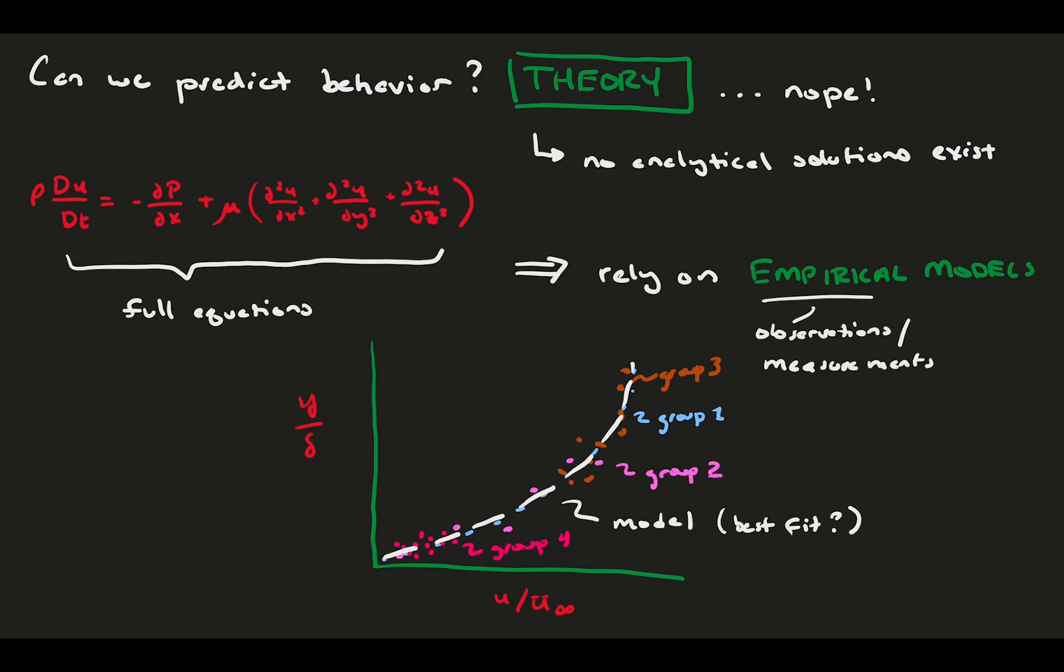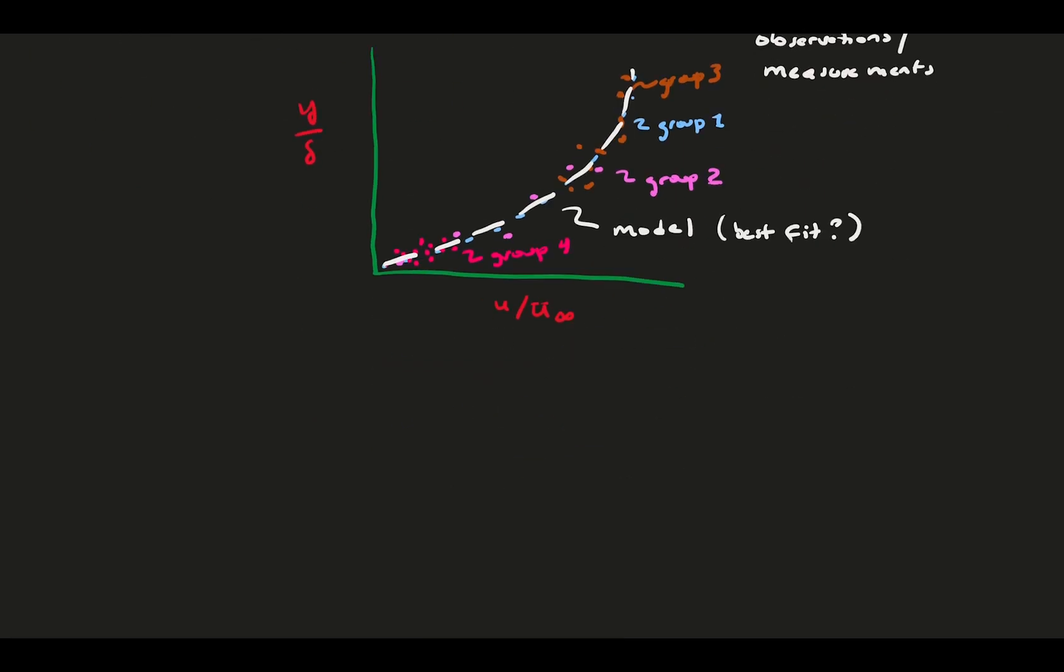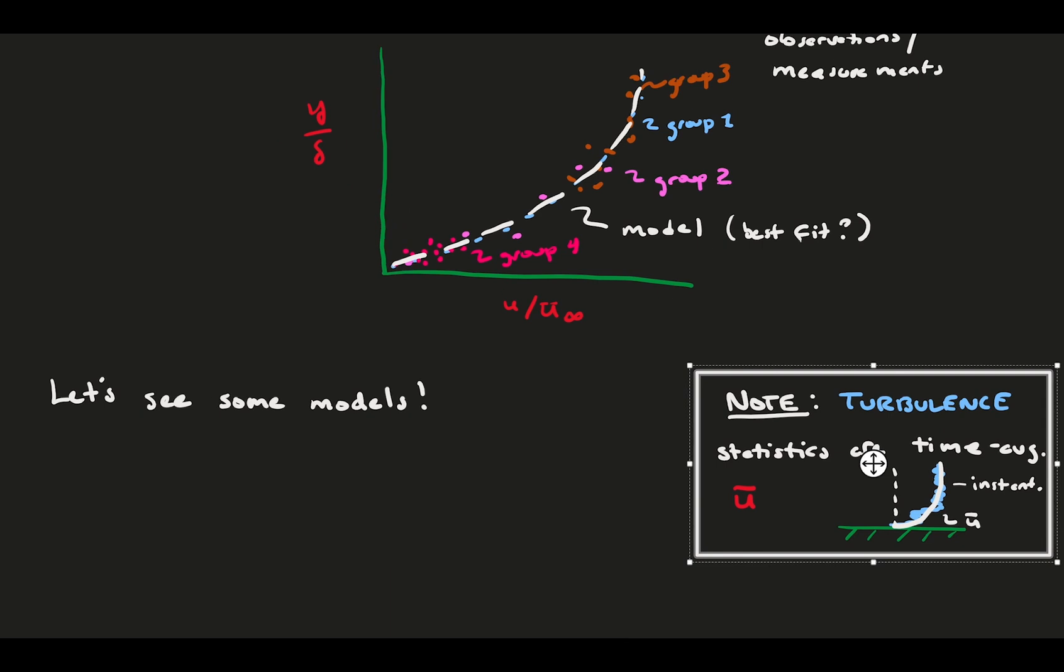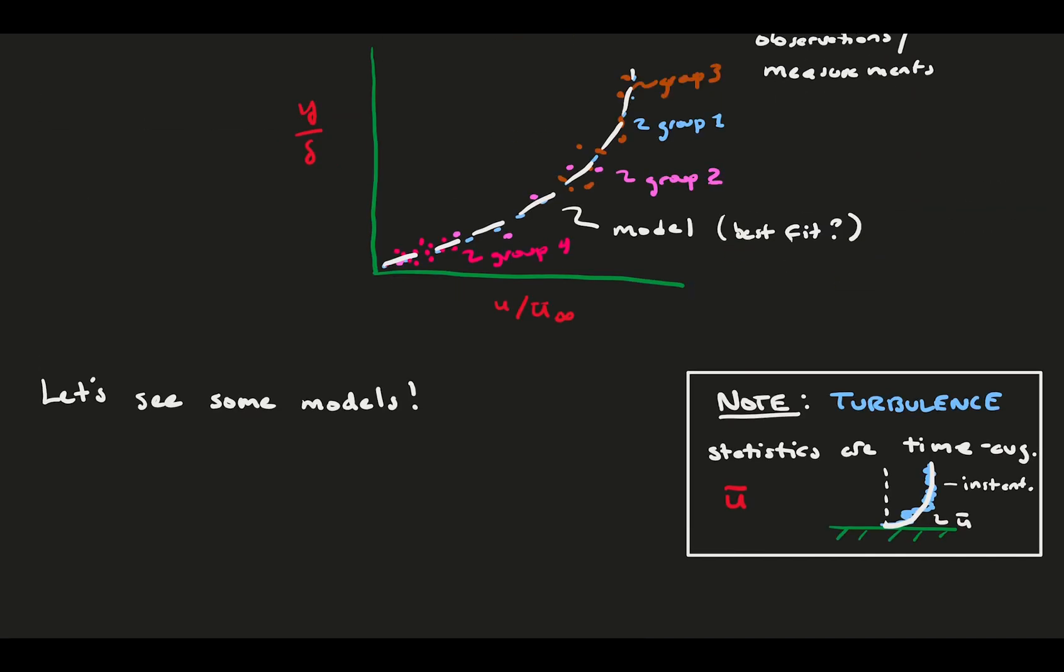This represents the limitation of empirical modeling versus true theoretical derivation. Theory is general, which means it applies to a lot of different situations, whereas empirical modeling requires specific data for a specific condition. Let's go over some of the ways we can define properties of the turbulent boundary layer. Before we start, keep in mind that turbulence quantities are represented in the time average. Instantaneously, the flow boundary layer is chaotic and unsteady. We can really only claim to define the time average behavior. This is what sparks the derivations of things like the RANS equation so that we can analyze turbulence flows, as done in a past video.